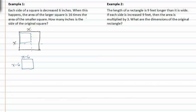From here, we know that the area of the larger square is sixteen times the area of the smaller square. How many inches is the side of the original square? We know that the area for the large square is defined by x squared. We need to make the smaller area equal the larger, so we'll multiply by sixteen since the larger square is sixteen times the area of the smaller square. The sides will be defined by x minus six, squared.